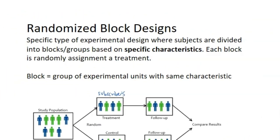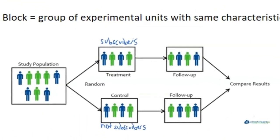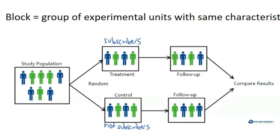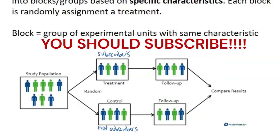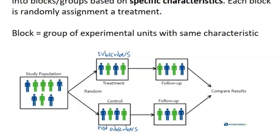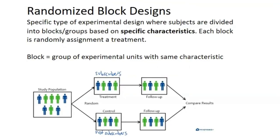We're going to finish off with randomized block design — a specific type of experimental design where subjects are divided into blocks or groups based on specific characteristics, similar to stratified random sample. Each block is randomly assigned a treatment, and a block is just a group of experimental units with the same characteristic. For example, our study population could be PrepWorks viewers watching this video, split into block one — PrepWorks subscribers — and block two — non-subscribers. Treatments are then randomly assigned within each block using a random number generator or names in a hat.